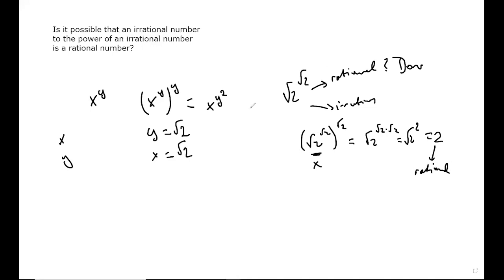And now this solves our problem. It says that it's possible that an irrational number to the power of an irrational number is a rational number. Now note this, we don't know whether this is rational or irrational. We've never proved it. But we proved that if it's rational, we are done. And if it's irrational, we are also done.